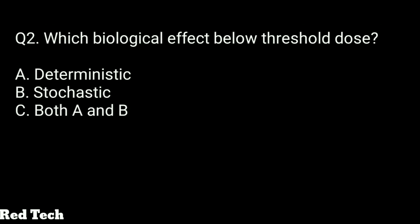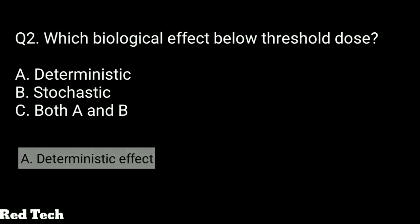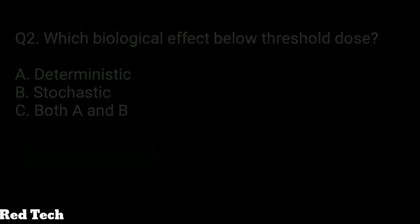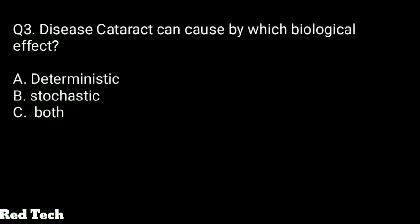Question number two: which biological effect occurs below threshold dose? Options: deterministic, stochastic, or both. The right answer is option A — deterministic effect comes under below threshold dose.